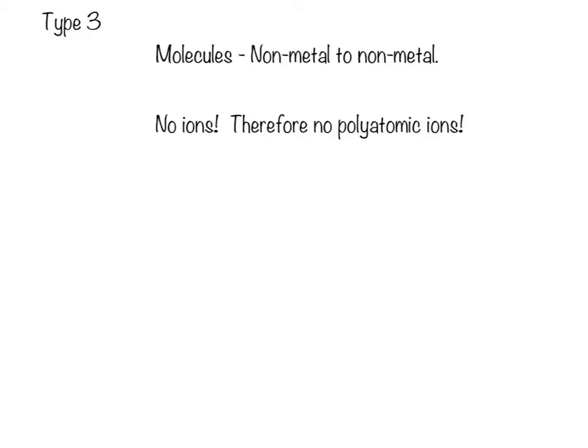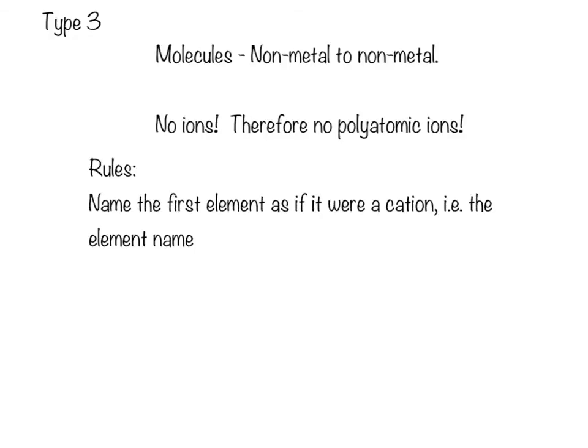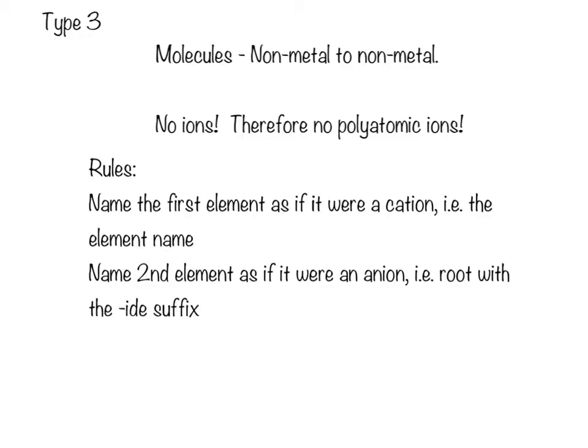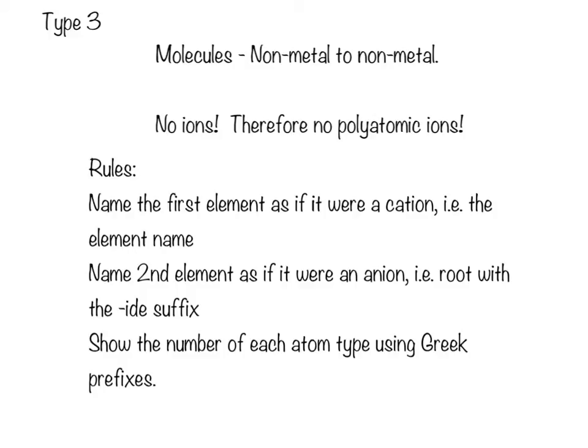Now, the rules for determining the type 3 nomenclature are pretty simple. We name the first element as if it were a cation. In other words, we give it the element name, just like we did prior. We name the second element as if it were an anion, i.e., that gives us the root with the IDE suffix. Here's where we change it up a bit. We show the number of each atom type using Greek prefixes. So, let's talk about our Greek prefixes.